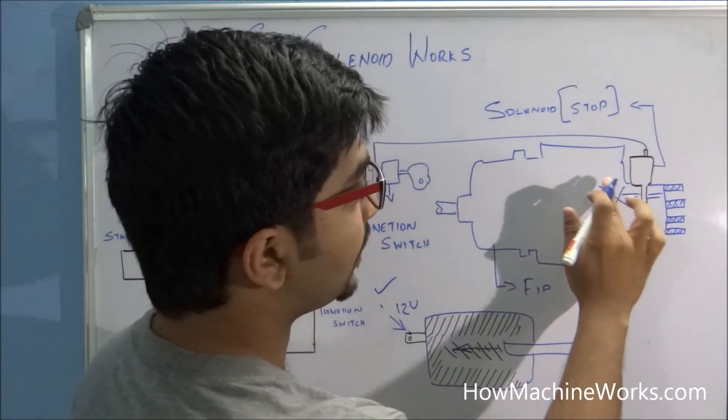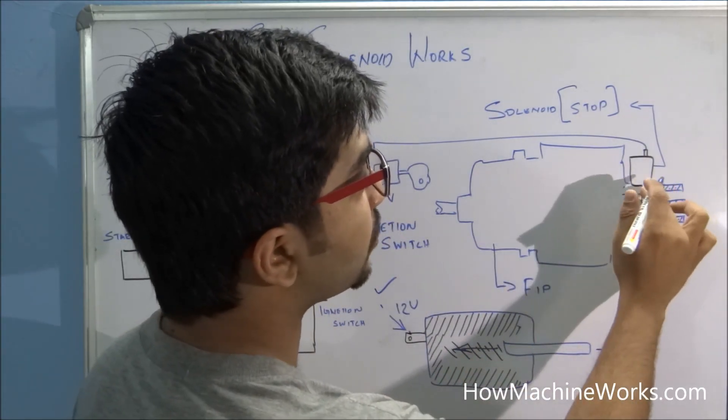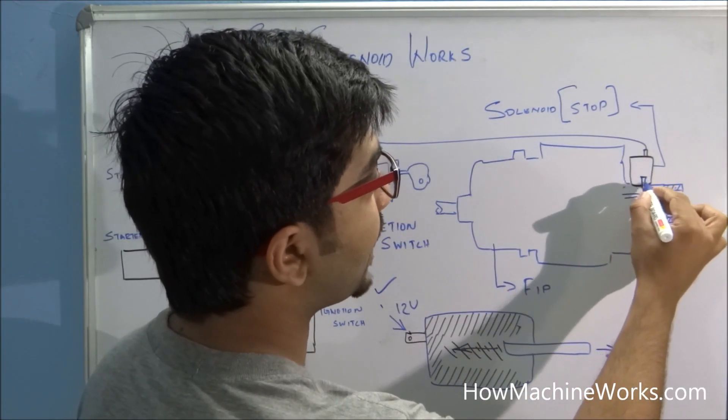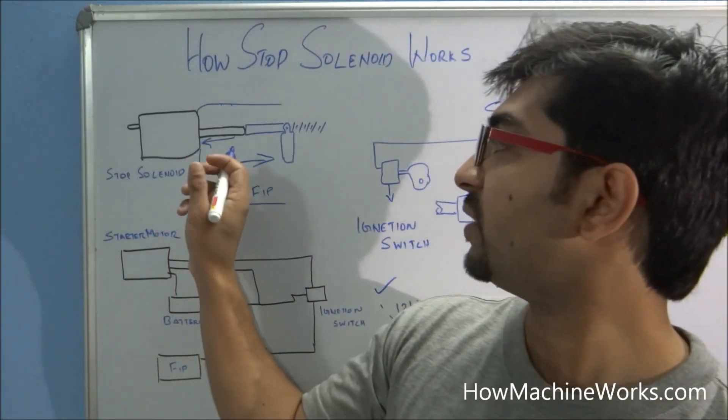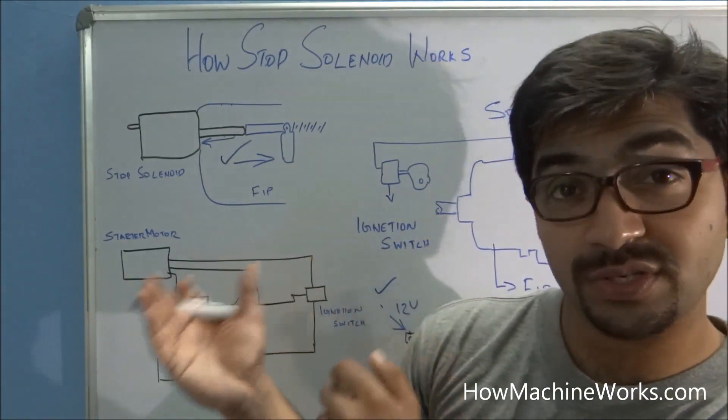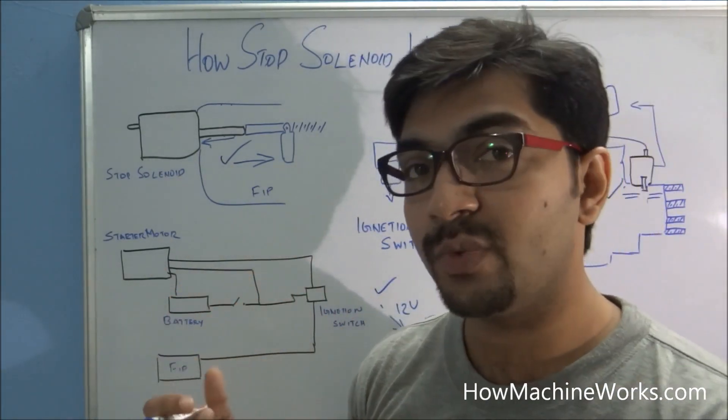And as a result of that, the fuel line is on right now. This shaft goes back and this fuel line is open over here. The fuel line opens up and the fuel goes into the engine. And as a result of that, the engine works.